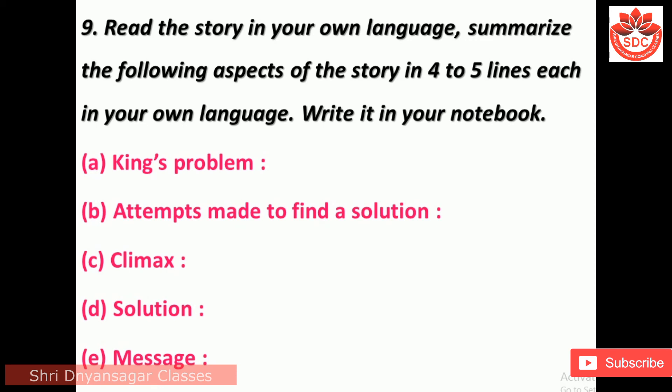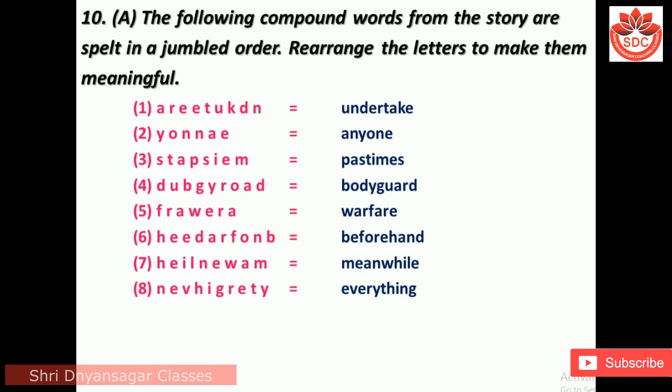Question 9: Read the story in your own language. Summarize the following aspects of the story in four to five lines each: the king's problem, attempts made to find a solution, climax, solution, and message.